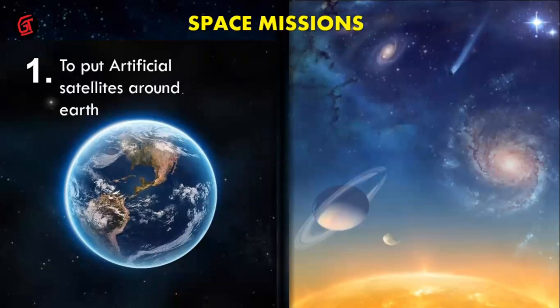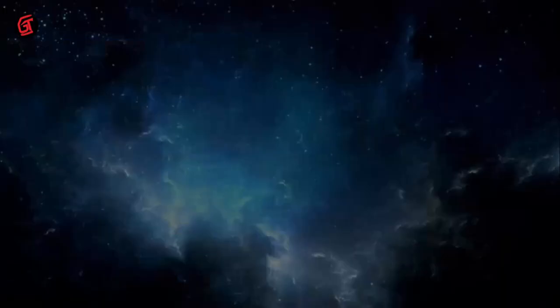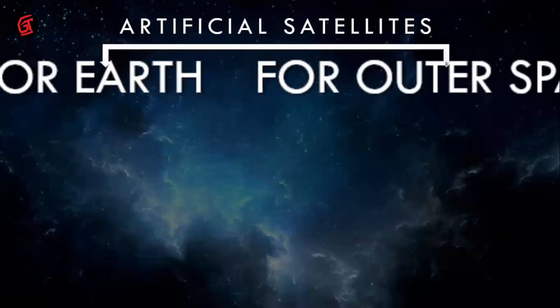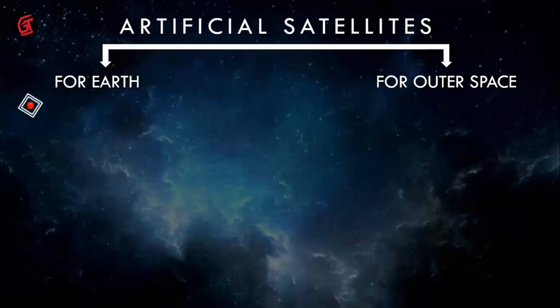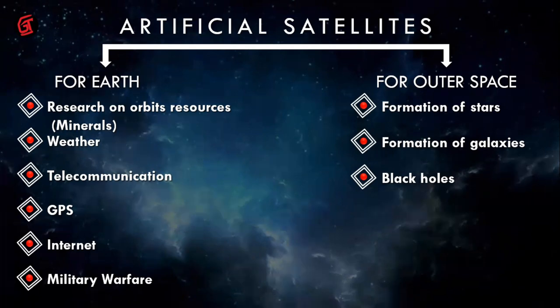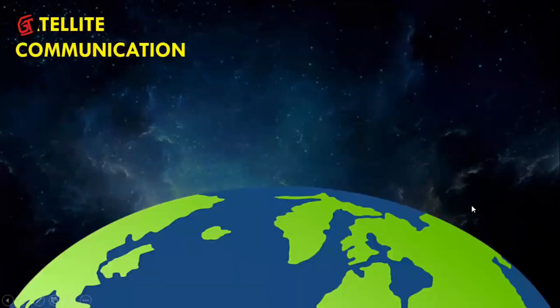Space missions are missions done to complete certain tasks — placing artificial satellites outside the earth so they revolve around it. Satellites are used for earth-based purposes such as research, weather forecasting, telecommunication, GPS navigation, and internet. Weather satellites tell us when rain, storms, floods, or high tides are coming. Some satellites are also used for military warfare.